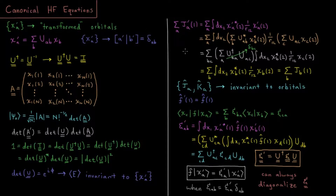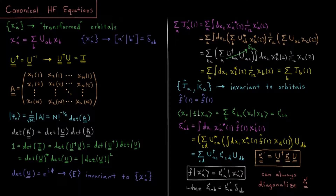This shows the Coulomb and exchange operators are invariant to the choice of orbitals. A similar analysis for the one-electron integrals shows that our entire Fock operator is also invariant to the choice of orbitals. Taking our Fock operator and the expression from the end of the previous video: F acting on chi-a equals the sum over b of epsilon_ba times chi-b.